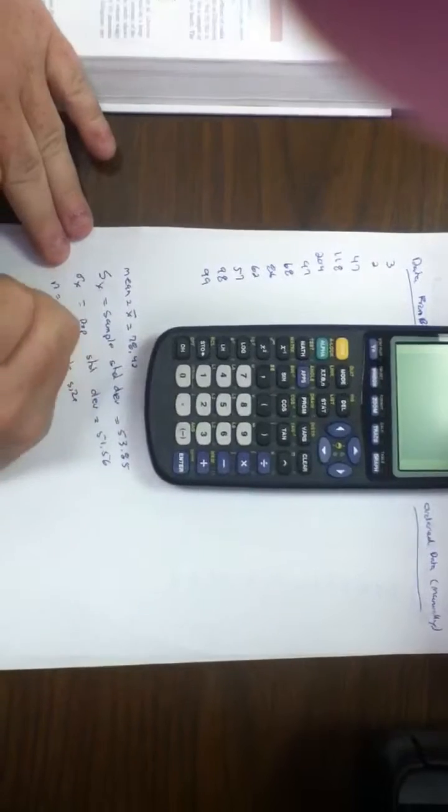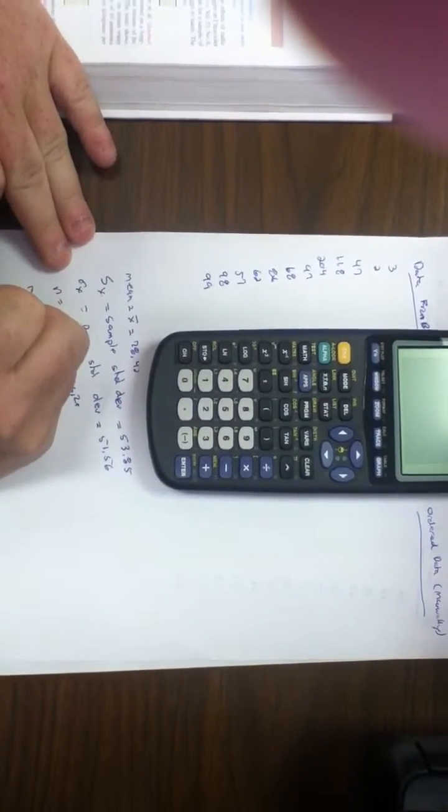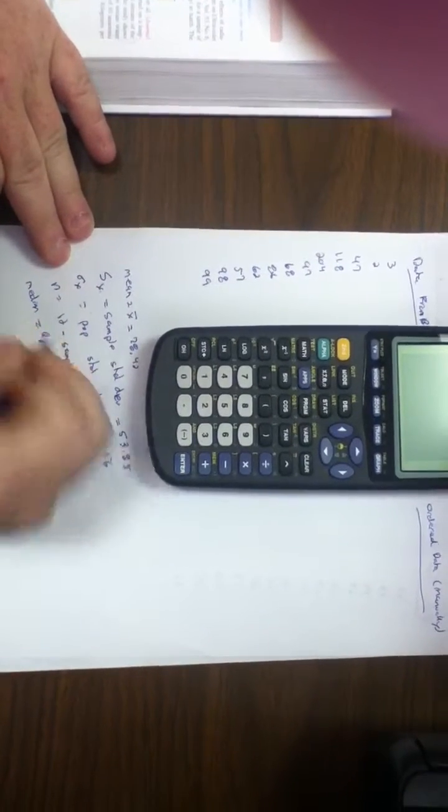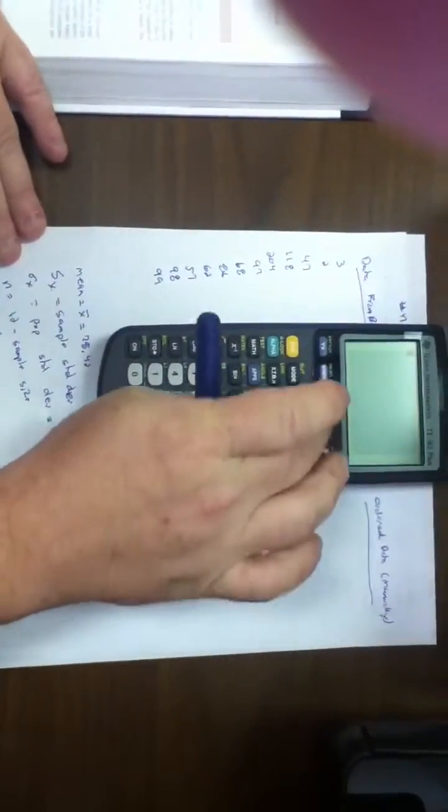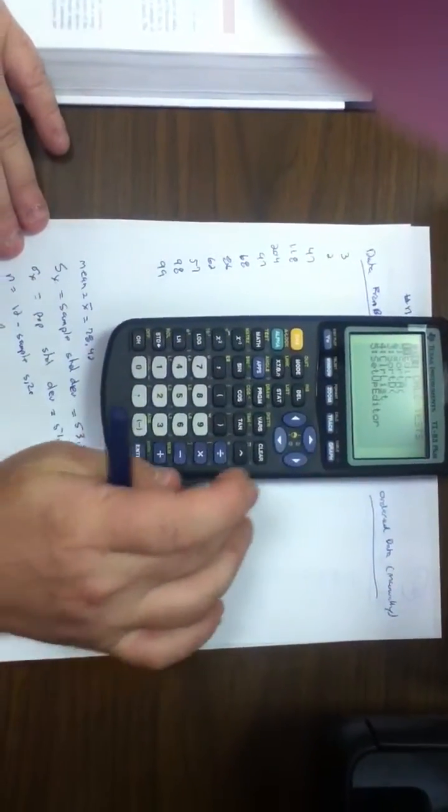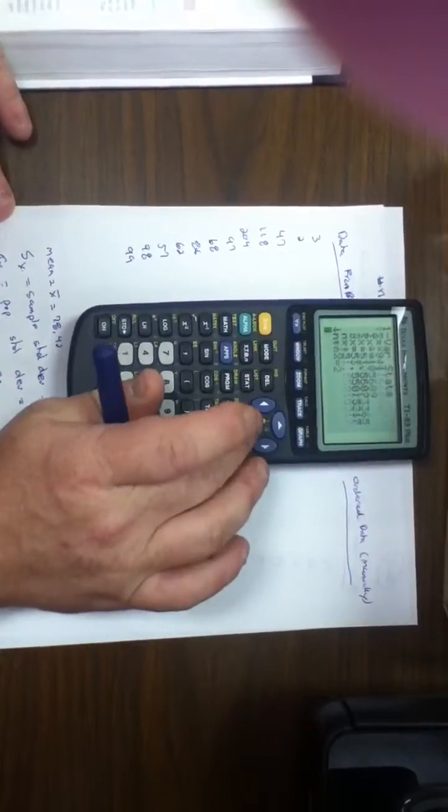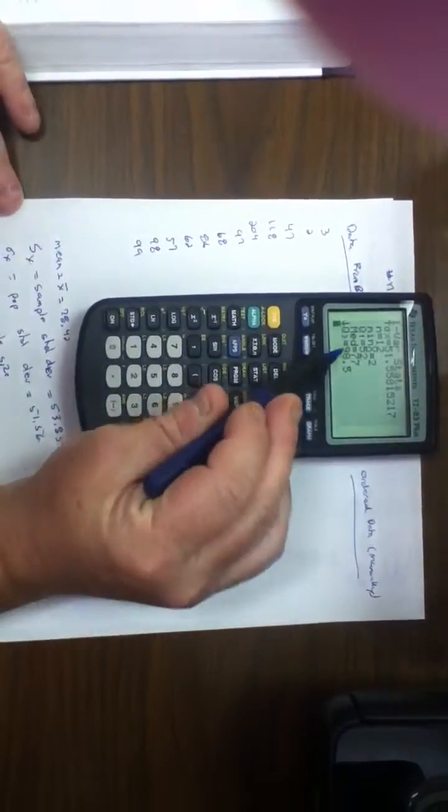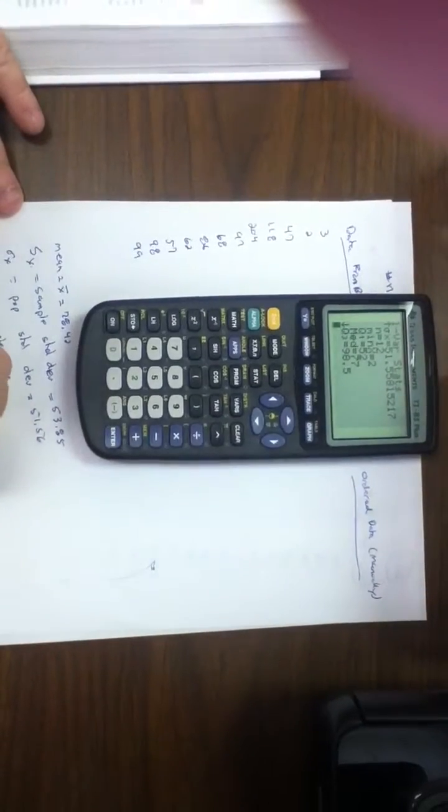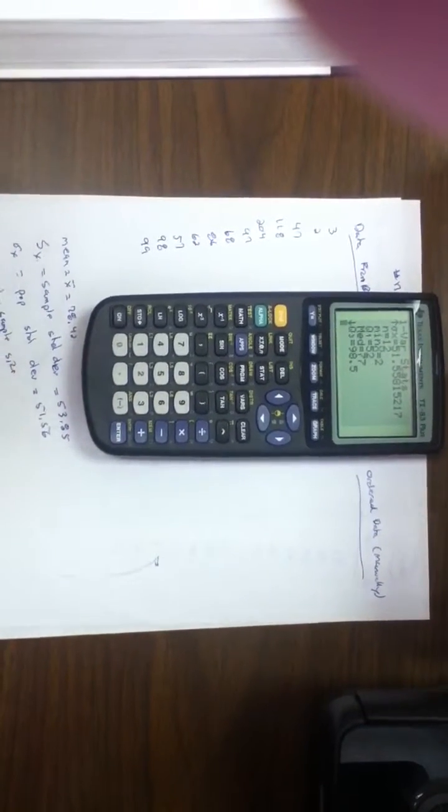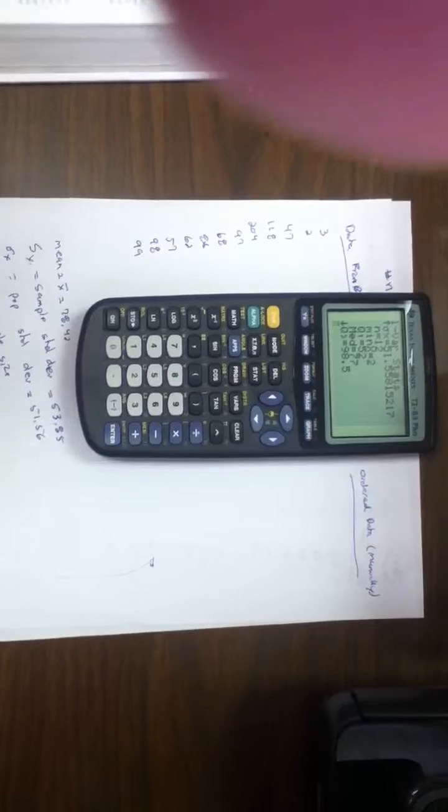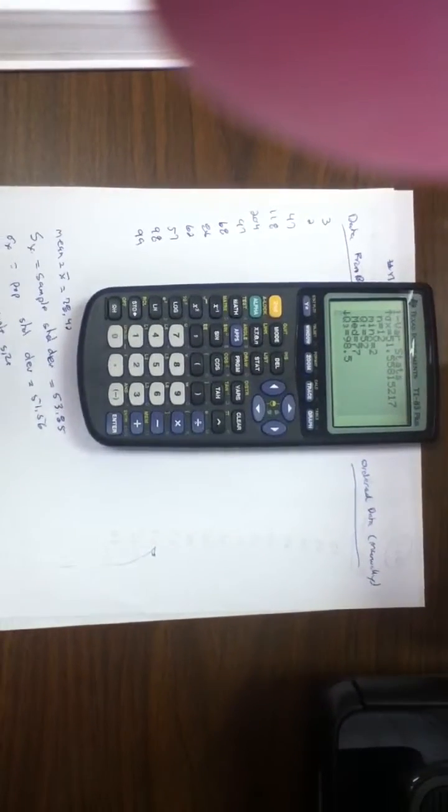I also could have found the median. Median would be Q2. If I still have the data in here, if I hit stat, arrow over to calc, hit one, and arrow down, median and Q2 are the same. So that's mean and median. Median is 77. We'll talk about Q1, Q3, min and max later on.